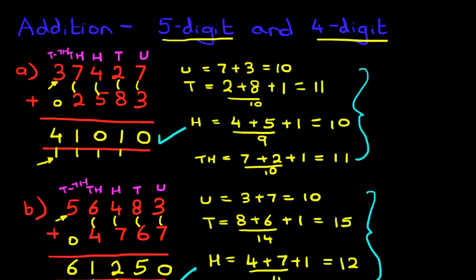In time, you'll be able to work through these with greater speed and with greater accuracy. So that is the addition of a 5 digit number with a 4 digit number.